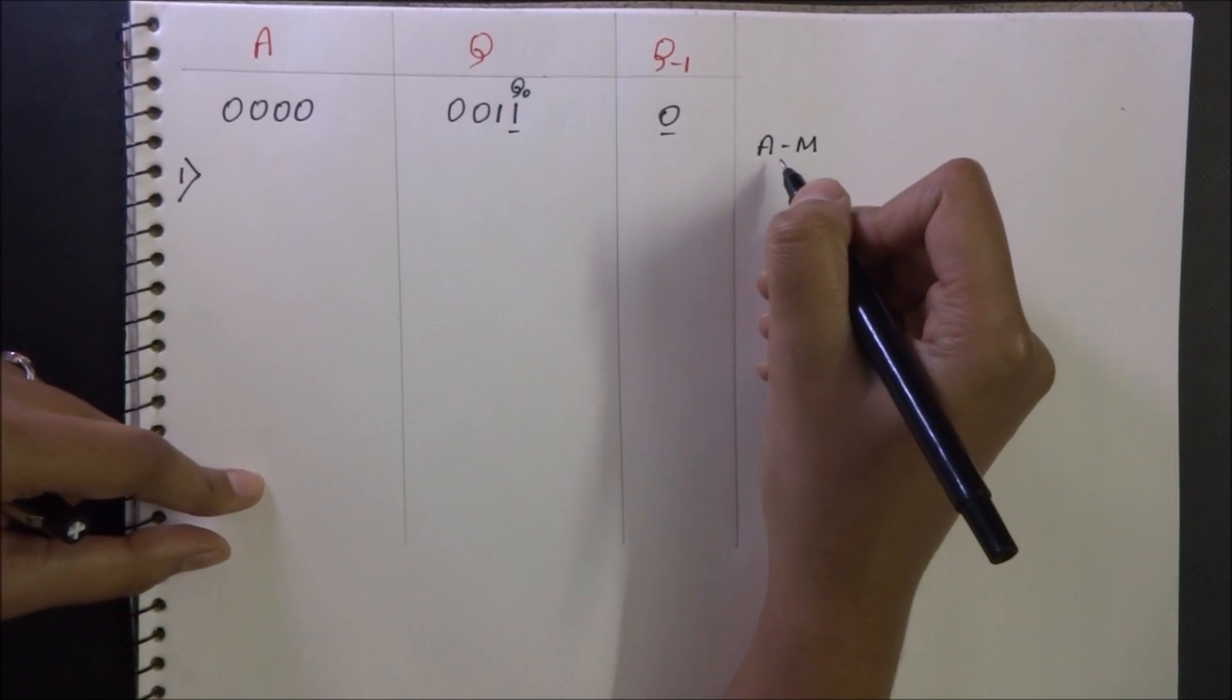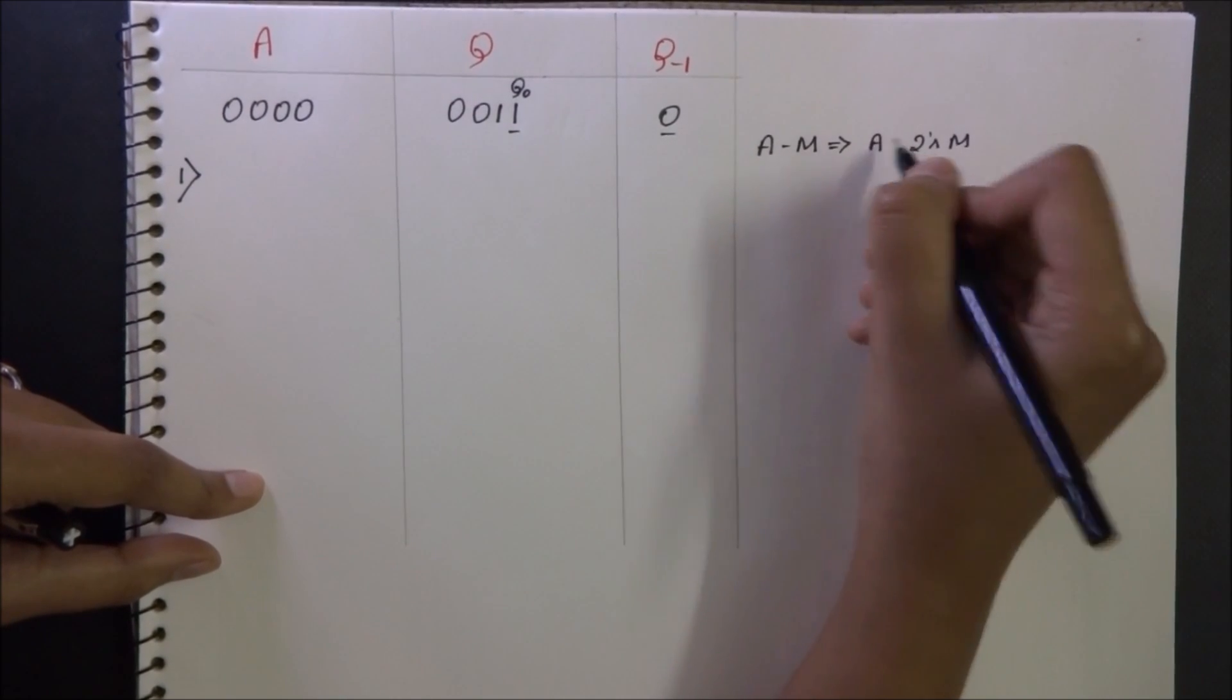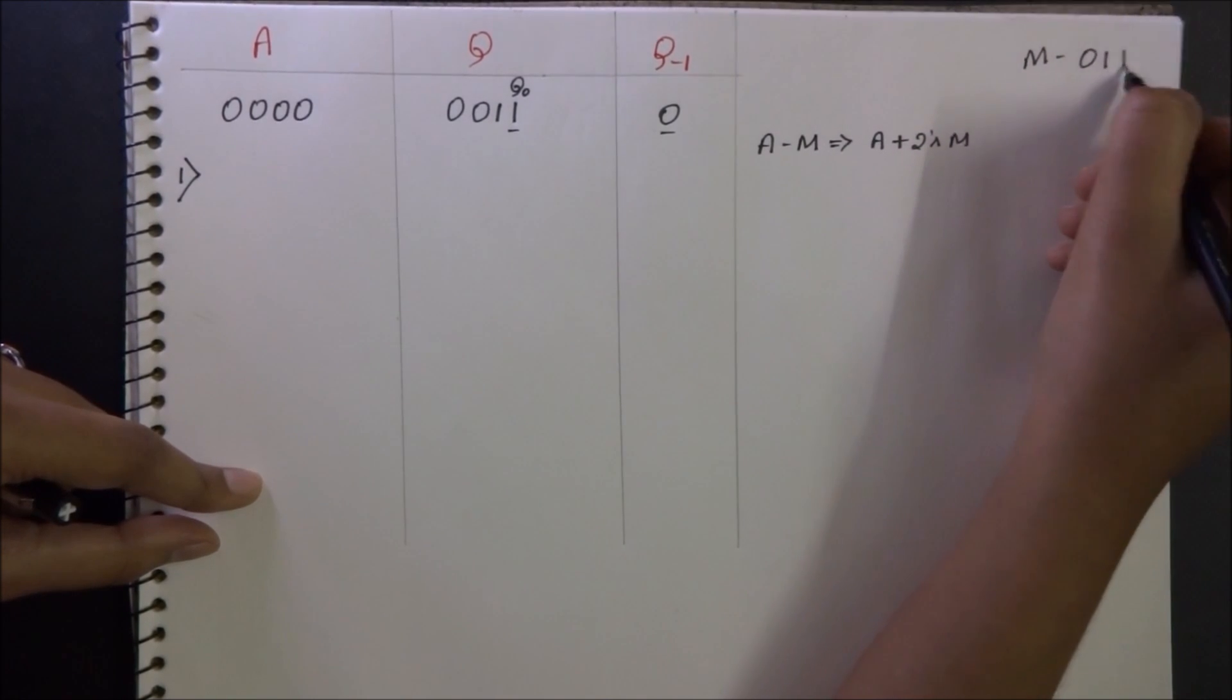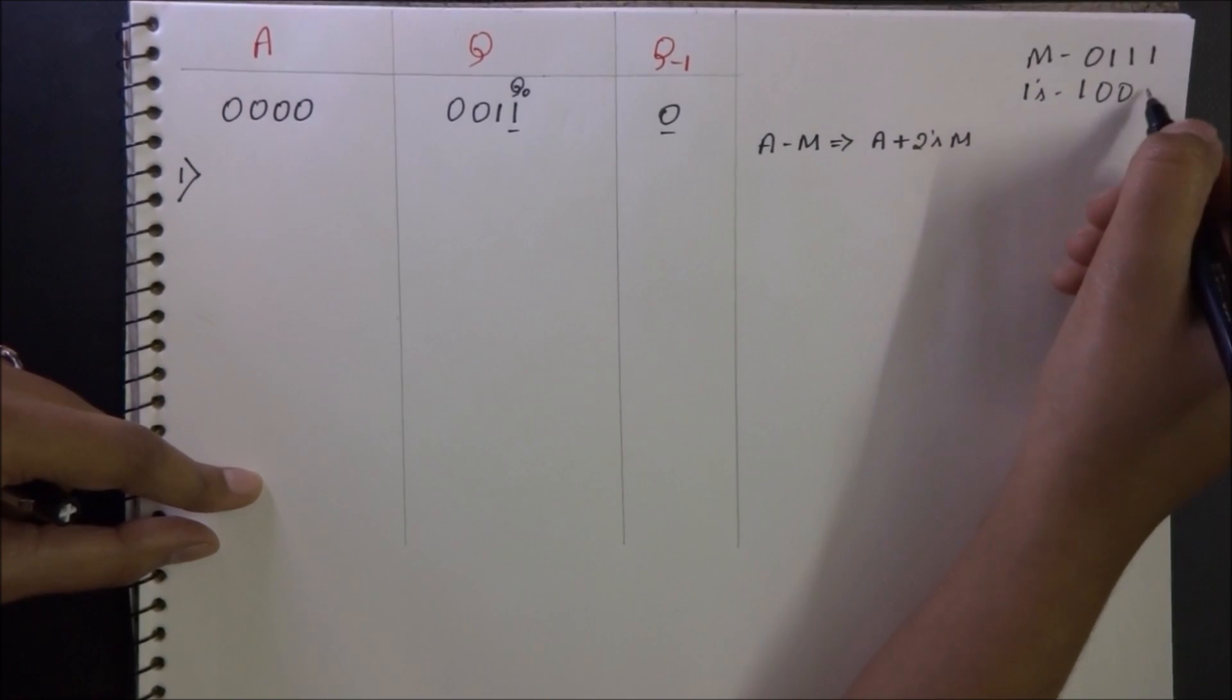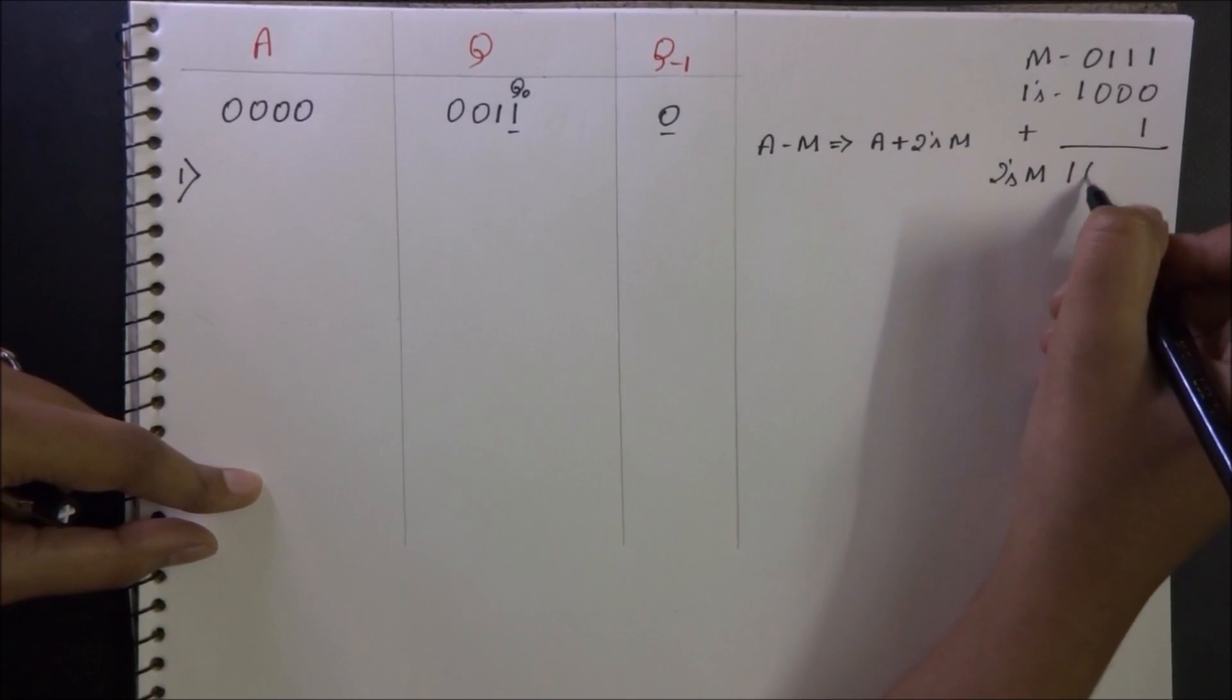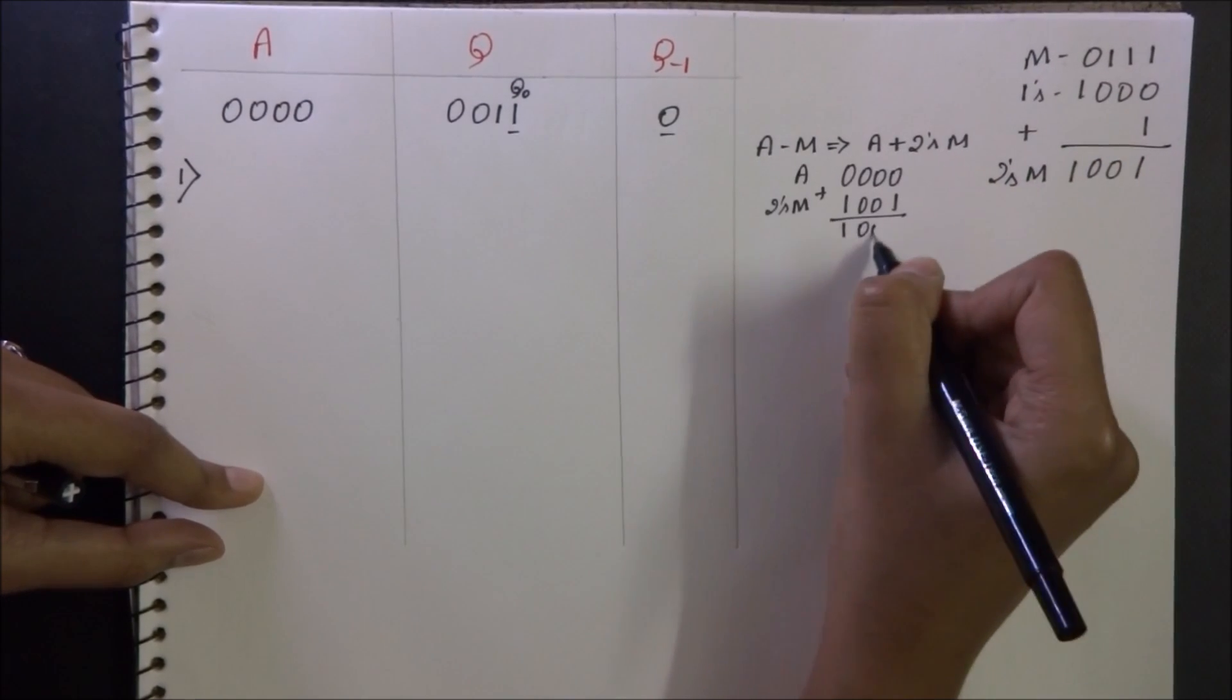We can either subtract M from A or we can add the 2's complement of M to A. So let me find out the 2's complement of M. M is 0-1-1-1. Its 1's complement is 1-0-0-0. And by adding 1 to the 1's complement, I get 2's complement of M, that is 1-0-0-1. So I add the 2's complement of M to A. So I get 1-0-0-1.